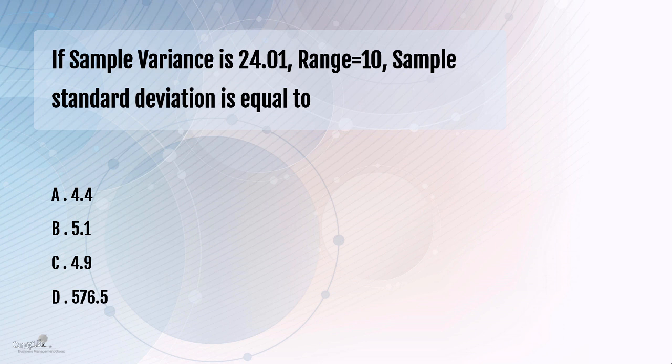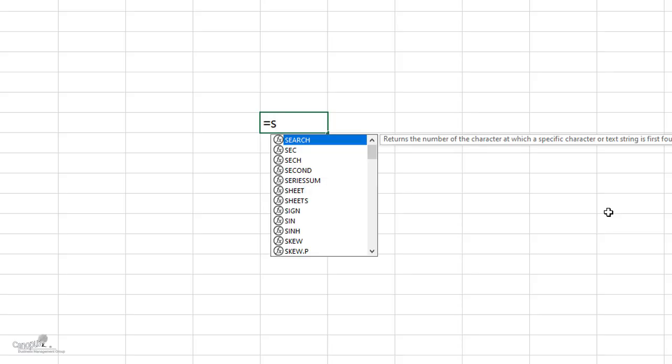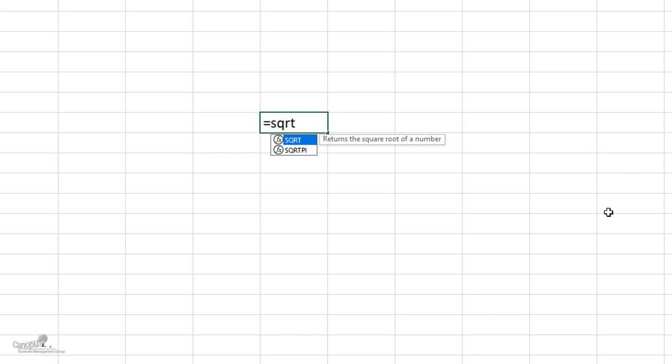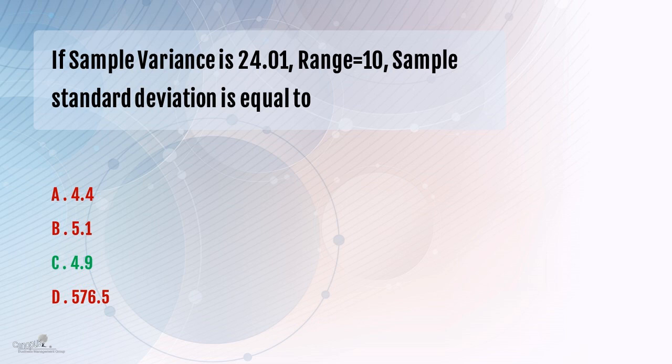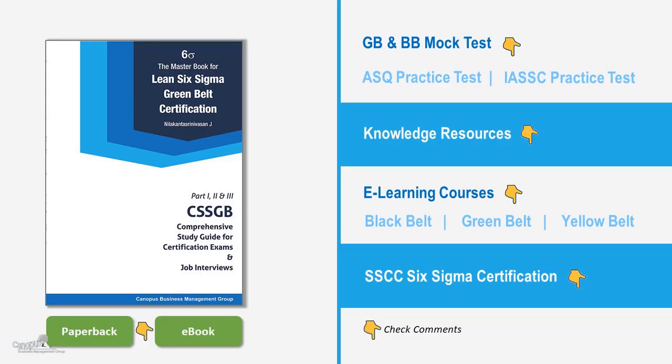As you must be already aware, the standard deviation is nothing but the square root of variance. So if we do square root of 24.01, we will be able to get the answer. So let's do that — square root of 24.01 — so the answer is 4.9, and so C is the right option.